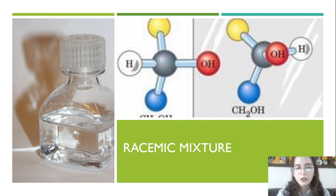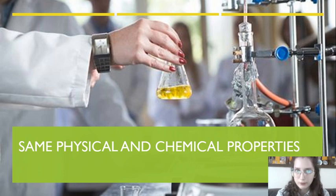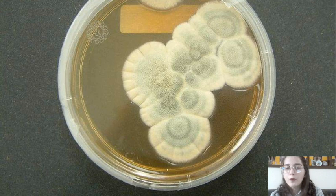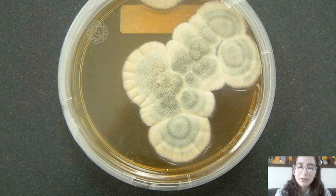Both enantiomers of a molecule with a chiral center have the same physical and chemical properties, which represents a difficulty when you want to separate them. For example, a racemic mixture could not be distilled because both enantiomers would have the same boiling point. The separation of pure enantiomers from a racemic mixture is called resolution. What Pasteur did was to separate a racemic mixture by taking advantage of a property of the fungus Penicillium glaucum, which fits only on one enantiomer of the racemic mixture of tartaric acid. After Pasteur's work, many resolution methods have been developed, but most of these require very expensive reagents and extreme reaction conditions.